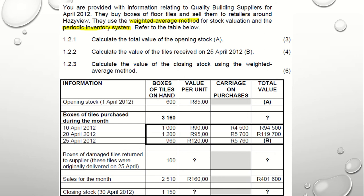To calculate B, take 960 boxes from the 25th of April 2012, multiplied by 120. Whatever answer you get, you will add carriage on purchases which is $5,760. That is how you will get B.